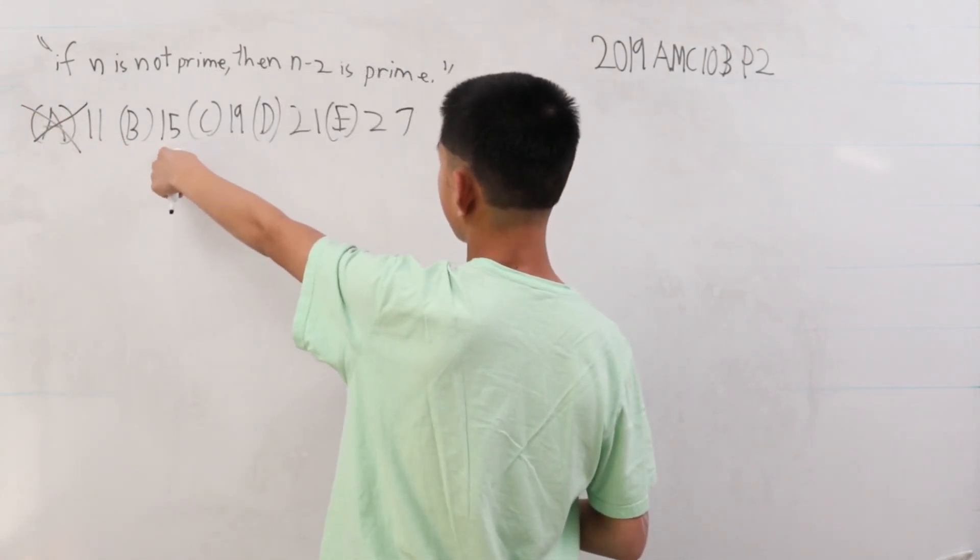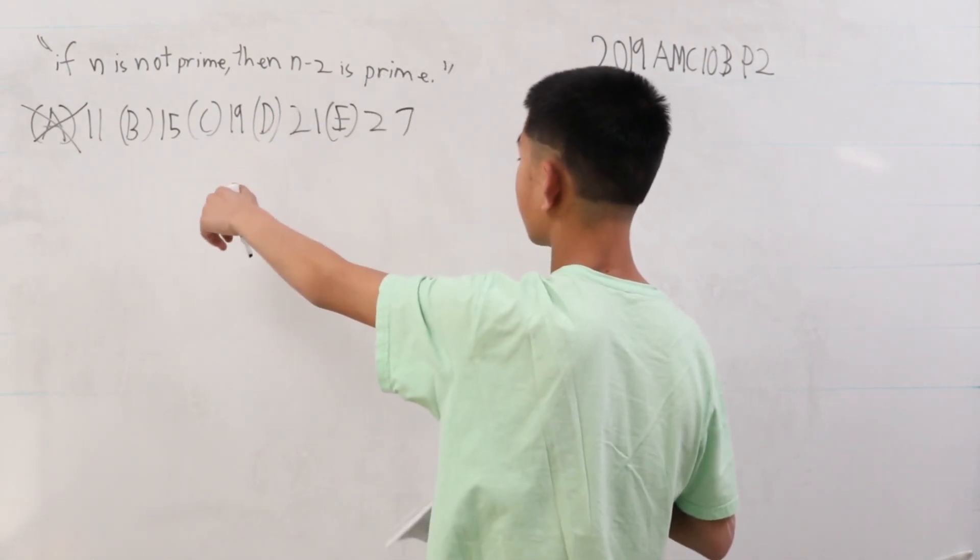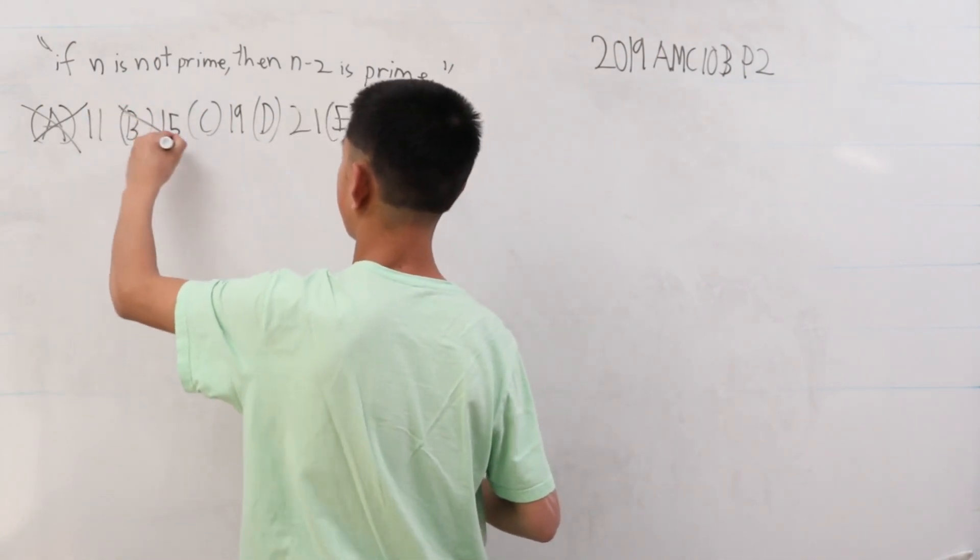Let's look at B. 15 is not prime, but n minus 2 is prime. You want a counter example, not an example, so this isn't it.